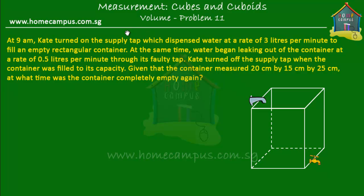Hello and welcome to homecampus.com.sg. Here's another problem on volume of cubes and cuboids. It says that at 9 a.m. Kate turned on the supply tap which dispensed water at a rate of 3 liters per minute to fill an empty rectangular container. At the same time, water began leaking out of the container at a rate of 0.5 liters per minute through its faulty tap. Kate turned off the supply tap and the container was filled to its capacity. Given that the container measured 20 cm by 15 cm by 25 cm, at what time was the container completely empty again?